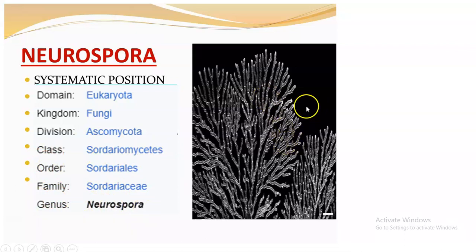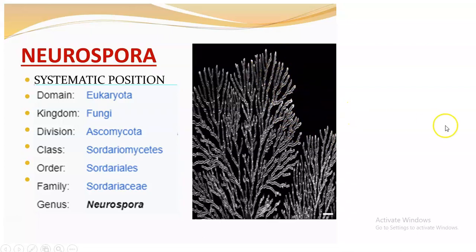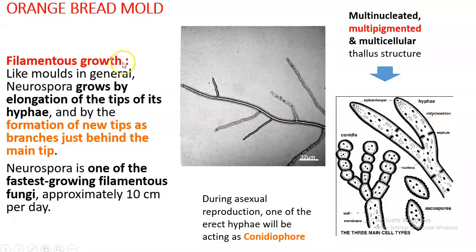You can see how vigorously it is branching. These are vegetative thalli — from one particular hypha, it is branching into other sub-hyphae. If they are asking about the structure, it is a filamentous fungi. This particular filament is elongating by apical cell division, and there will be sub-branching from the main branch. It is one of the fastest-growing filamentous fungi — approximately 10 centimeters of growth is seen in one single day.